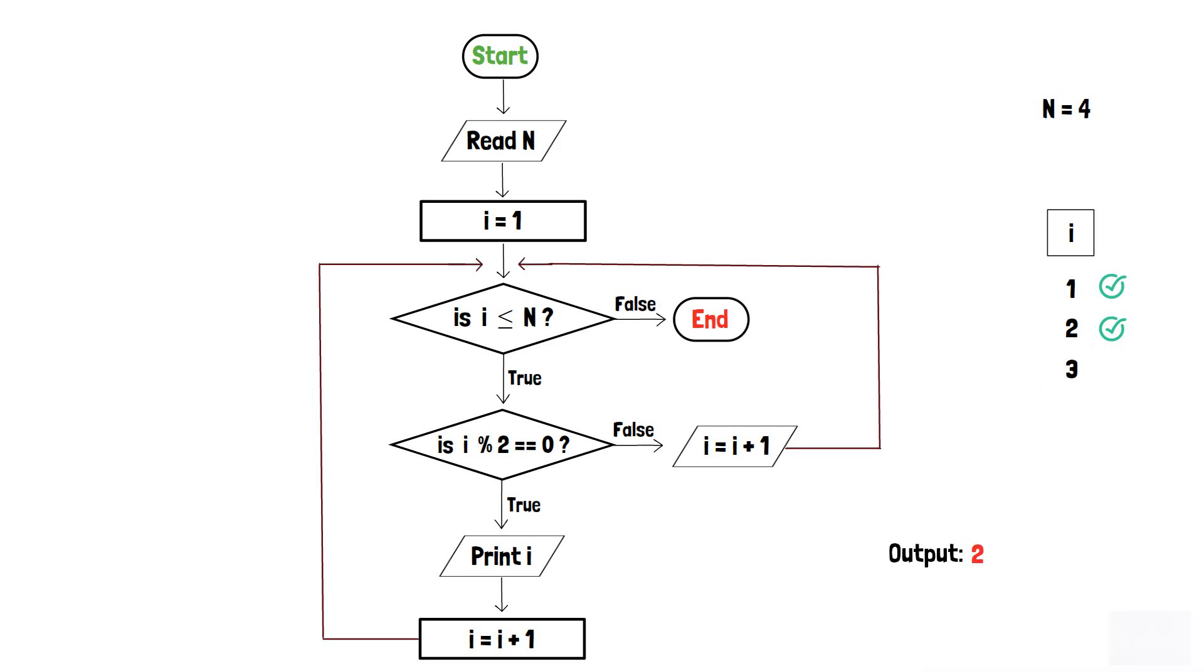Similarly, since 3 is less than 4, the condition in the first decision box is true. Therefore, 3 is sent forward to check the evenness. Here, 3 modulo 2 is not equals to 0. Consequently, i becomes 4 after incrementation.